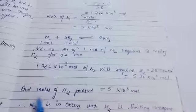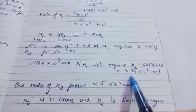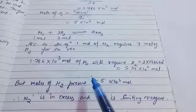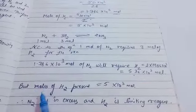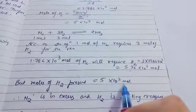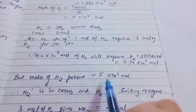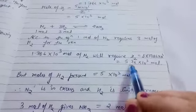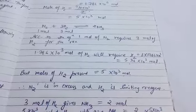The moles of hydrogen present is 5 × 10³, but how much is required is 5.36 × 10³. This shows nitrogen is present in excess and hydrogen is the limiting reagent, because the available hydrogen (5 × 10³) is 0.36 × 10³ less than what is required. So hydrogen is the limiting reagent.